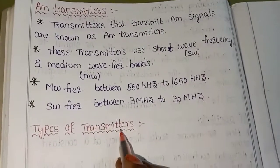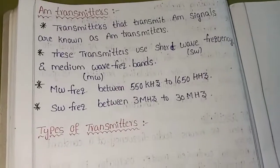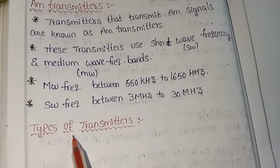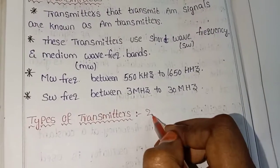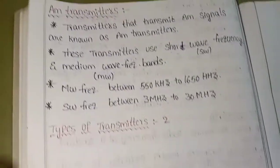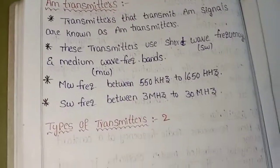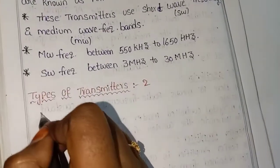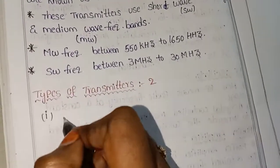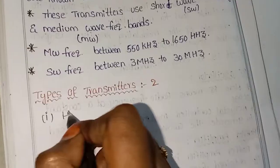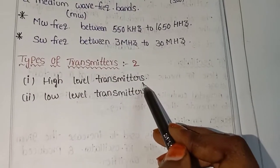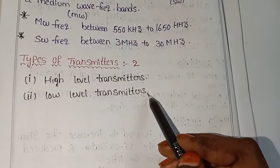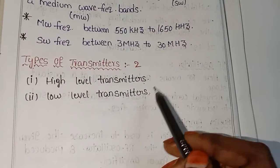There are two types of AM Transmitters. The first one is the High Level Transmitter and the second one is the Low Level Transmitter.